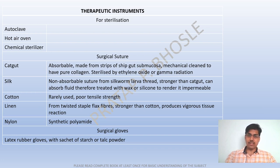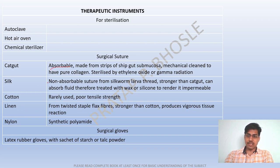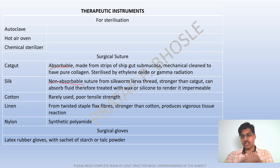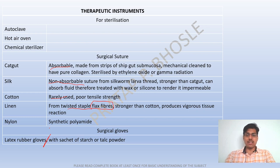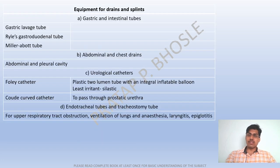Remember Silverman and Walton for biopsy punch forceps. Therapeutic instruments include the autoclave, hot air oven, and chemical sterilizer. Surgical sutures: catgut is absorbable; silk is non-absorbable. Cotton is rarely used. Linen is from twisted staple flax fibers. Nylon is synthetic. Surgical gloves are rubber latex gloves containing a sachet of starch or talc.